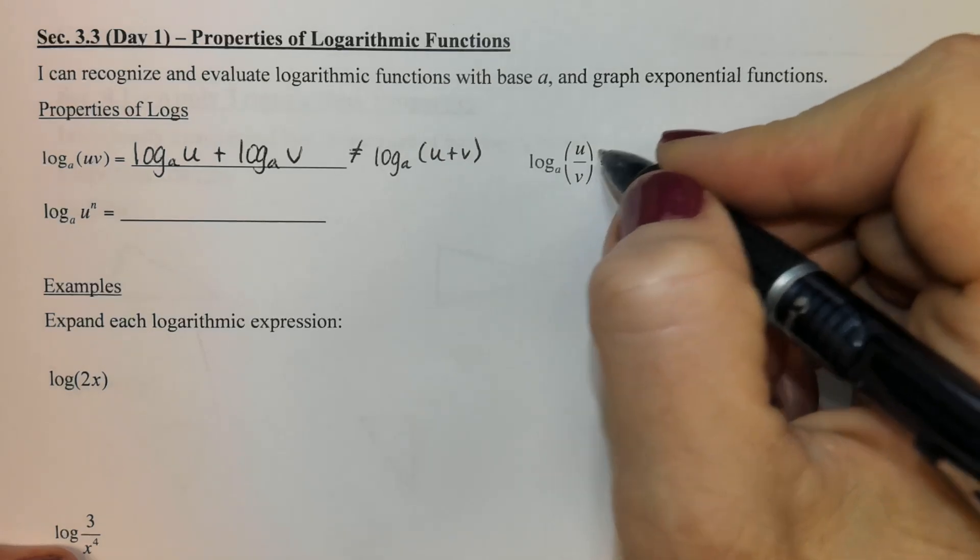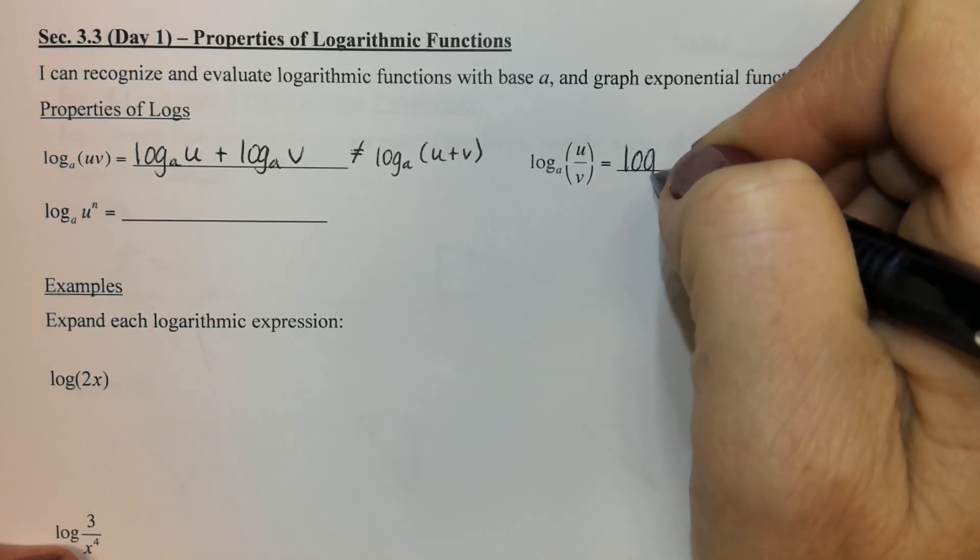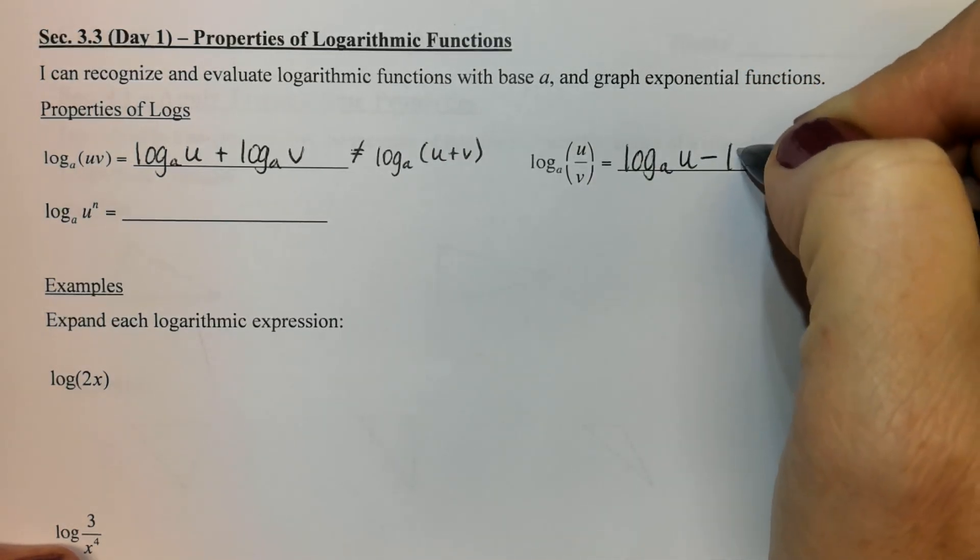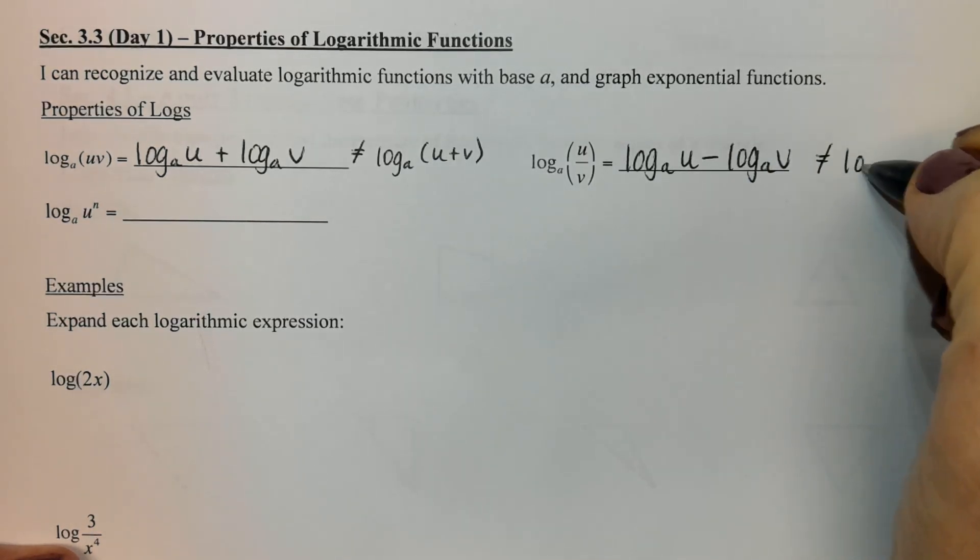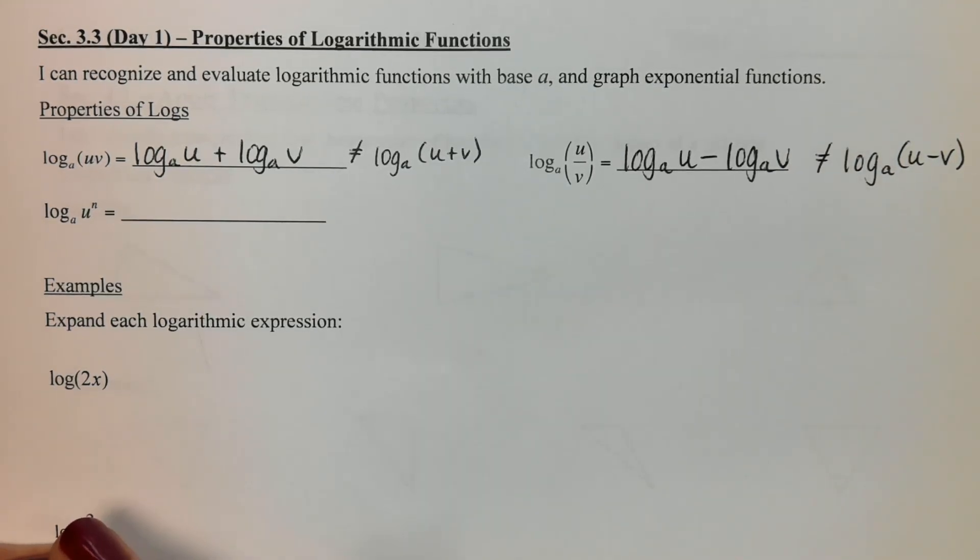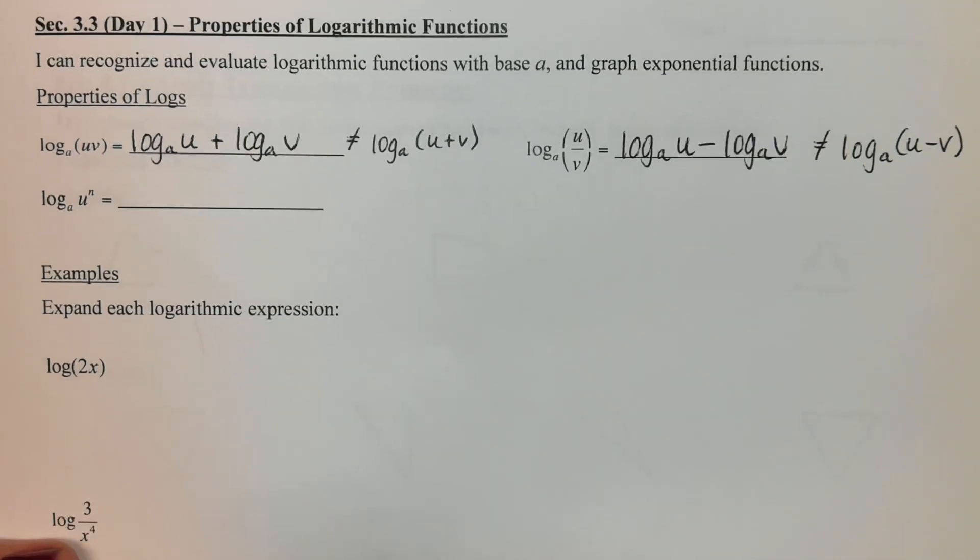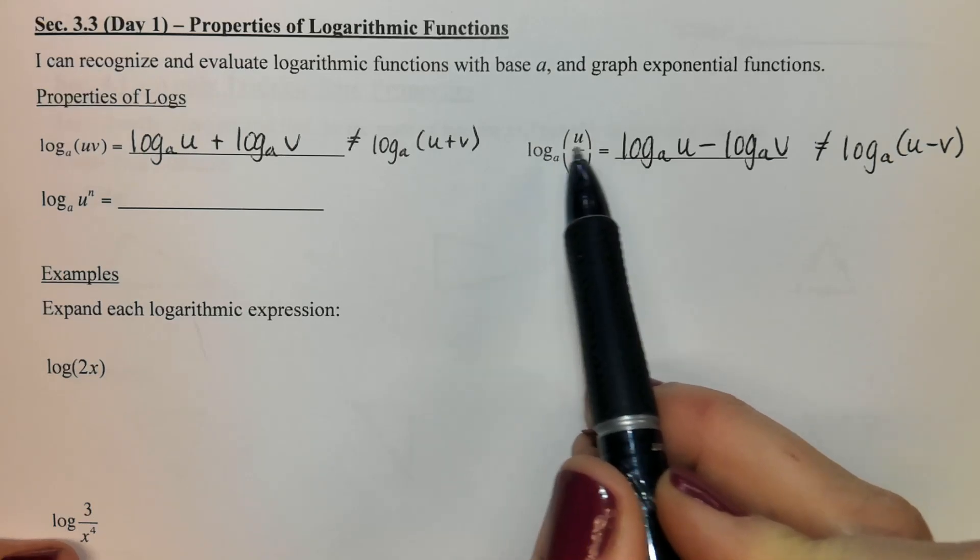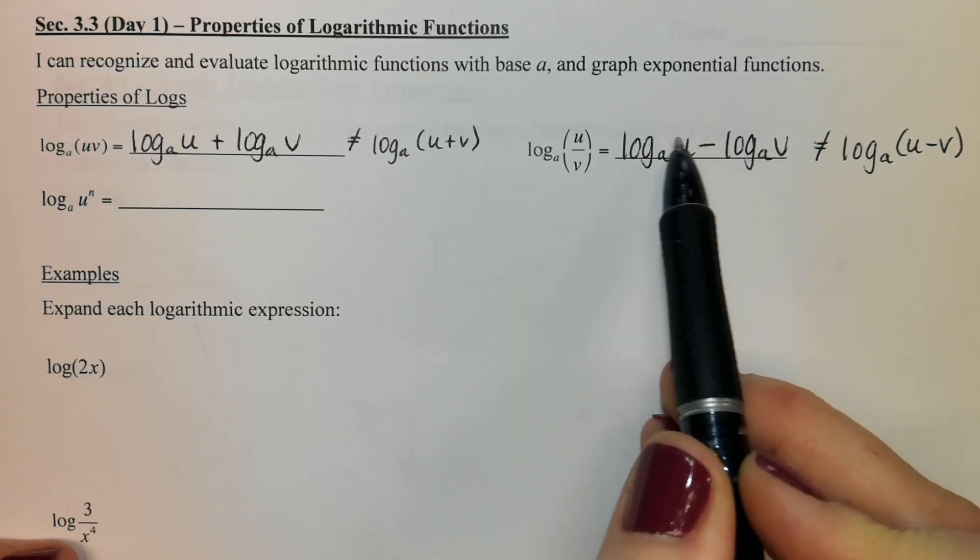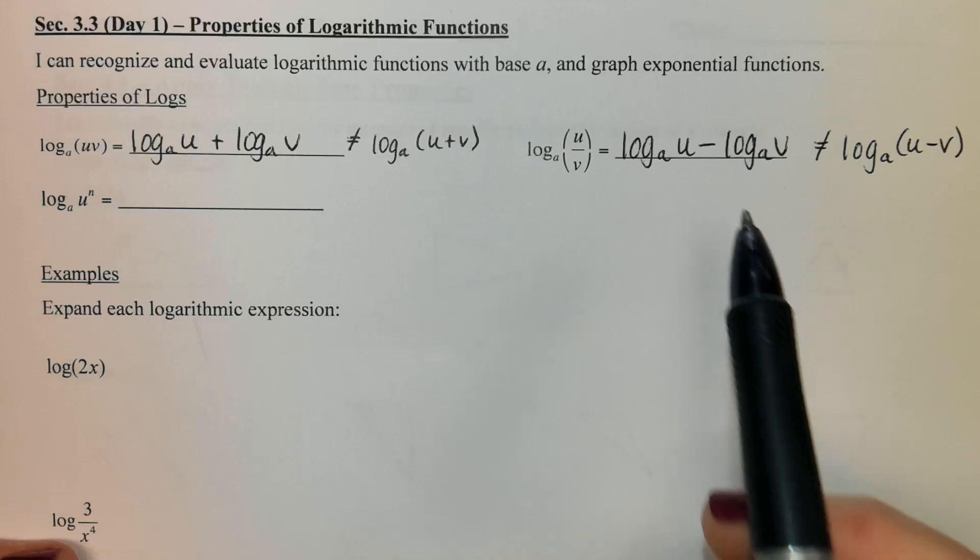Same kind of concept with division. This will actually turn into subtraction. And again I'll write the thing that it does not equal. It does not equal u minus v. Make sure that each of these values is getting its own log and you're completely separating the values from each other.